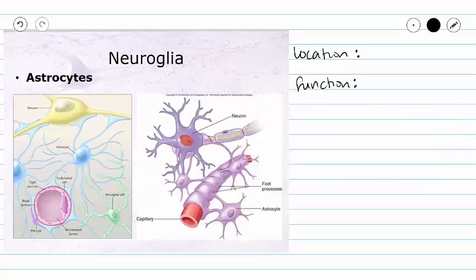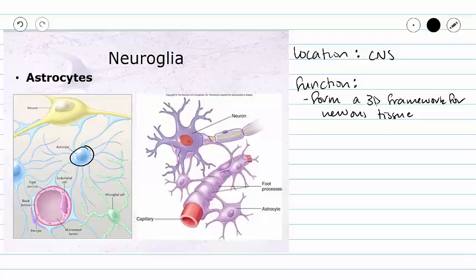The last type of glial cell in our central nervous system are called astrocytes. These cells have the broadest range of function inside of our central nervous system and they have many different jobs. One of the most notable jobs is that our astrocytes are going to form a supportive 3D framework for our nervous tissue. We can see our astrocyte on the left is connected to blood vessels and it's connected to neurons. It has these processes called pedicels that attach both to our blood vessels and to our neurons to hold everything in place.